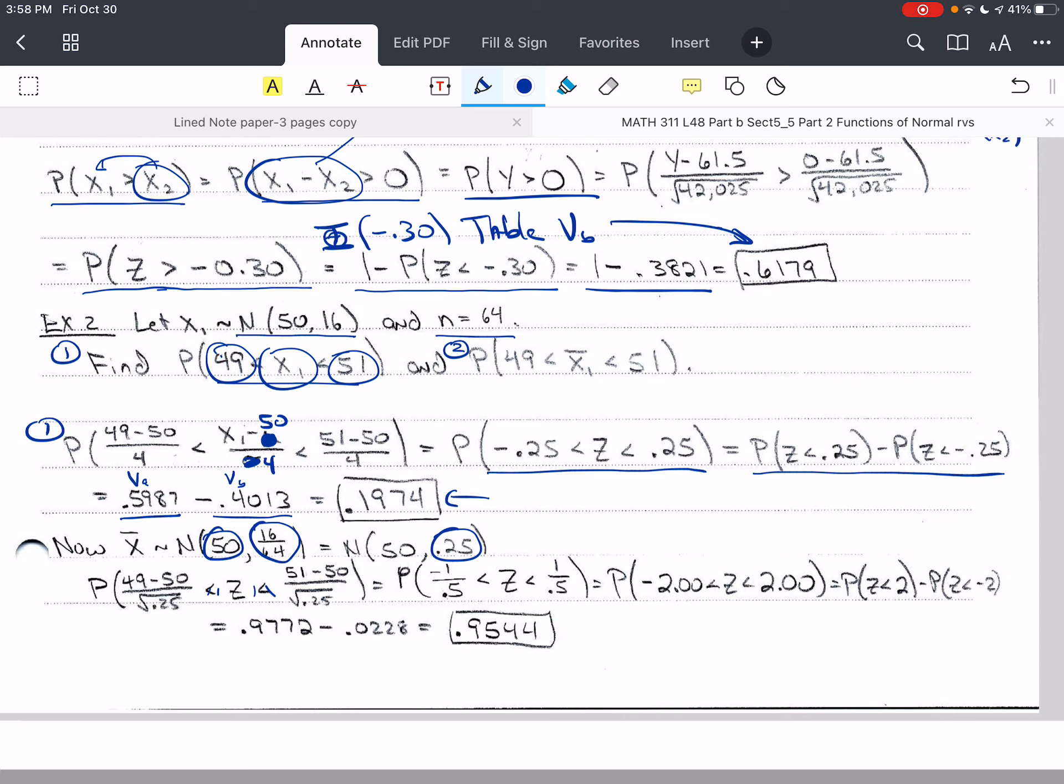So we do our transformation here to z for all three sides. And we end up with the probability that z is between negative 1 over 0.5 and positive 1 over 0.5, or z is between negative 2 and positive 2, which can be broken up as the probability z is less than 2 minus the probability z is less than negative 2.